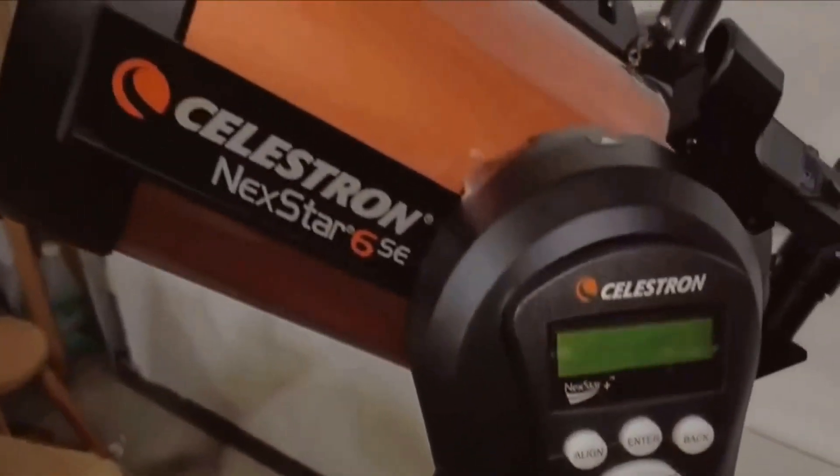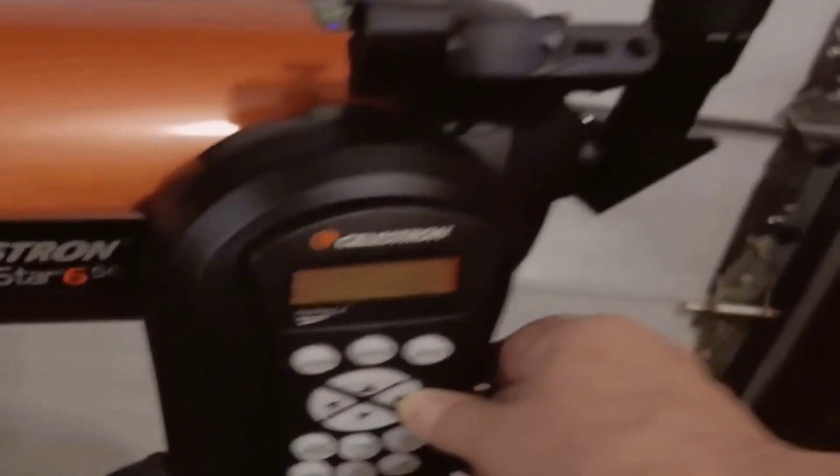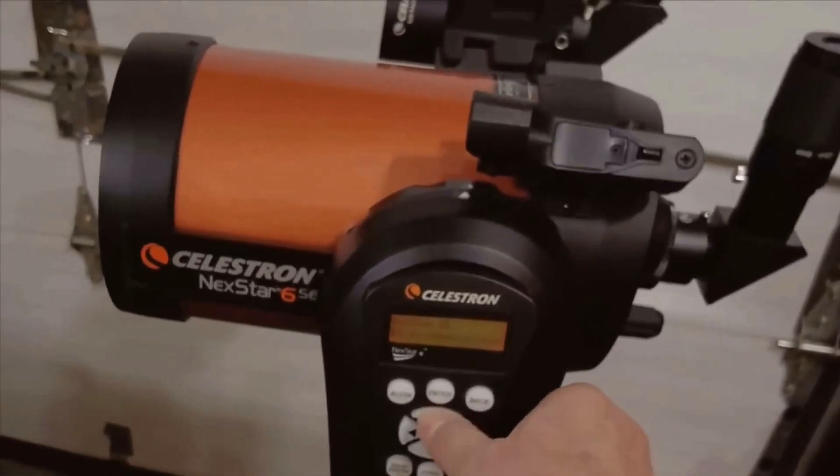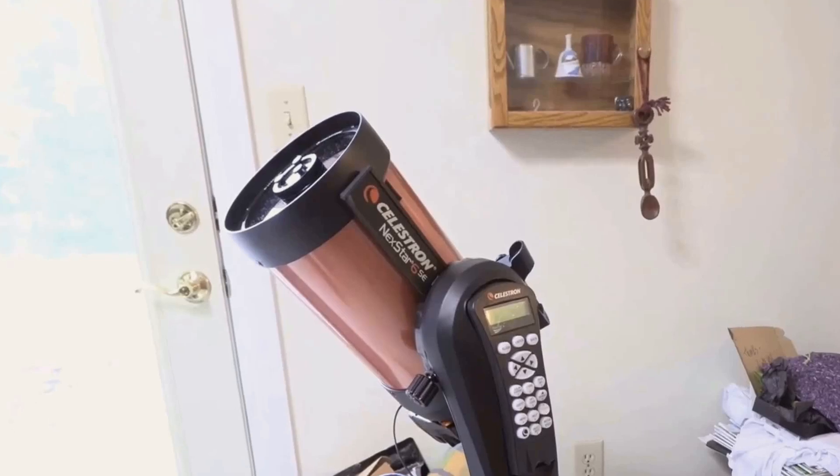In terms of performance, I have been blown away by the clarity and detail offered by the Celestron Nexstar 6SE. The 6-inch primary mirror provides stunning views of the Moon, planets, and deep sky objects. Saturn's rings, Jupiter's moons, and even distant nebulae come into sharp focus with remarkable detail. The optics are excellent, and the overall viewing experience is nothing short of breathtaking.